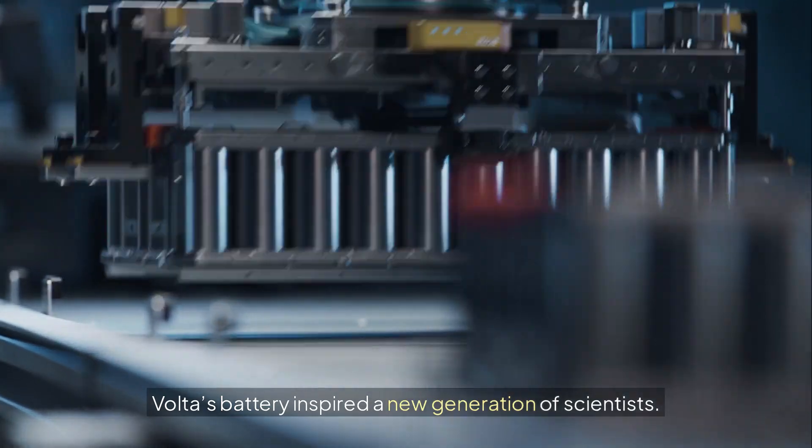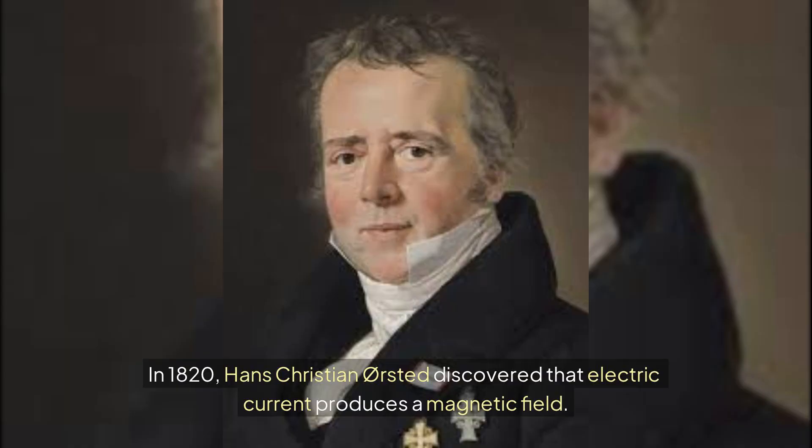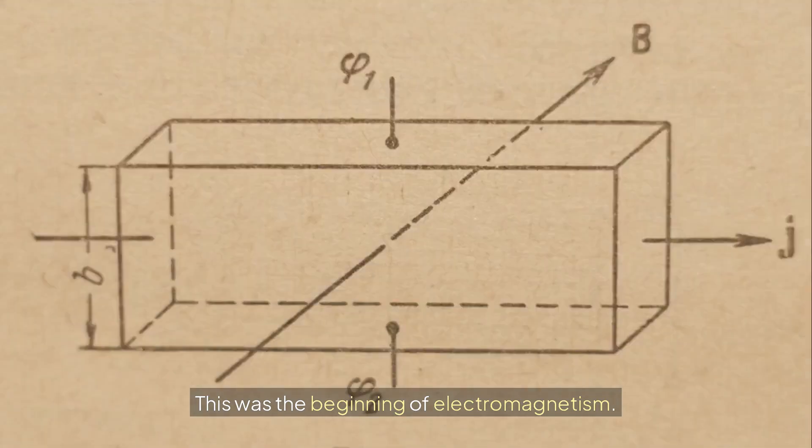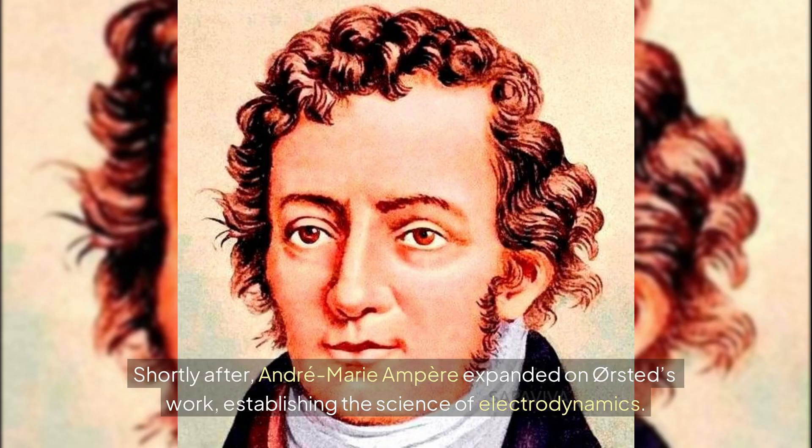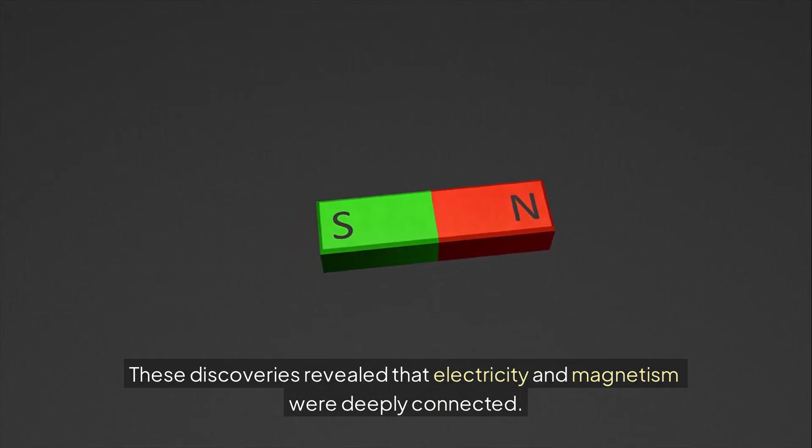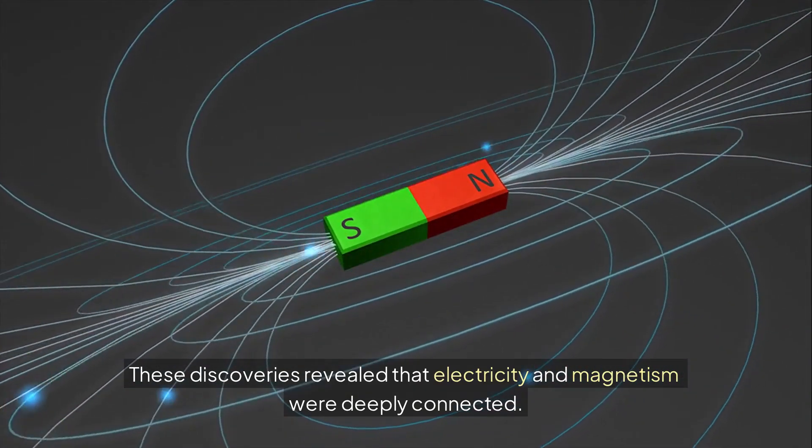Volta's battery inspired a new generation of scientists. In 1820, Hans Christian Ørsted discovered that electric current produces a magnetic field. This was the beginning of electromagnetism. Shortly after, André-Marie Ampere expanded on Ørsted's work, establishing the science of electrodynamics. The unit of electric current, the Ampere, is named in his honor. These discoveries revealed that electricity and magnetism were deeply connected.